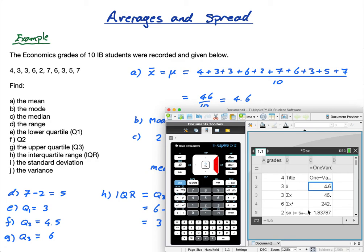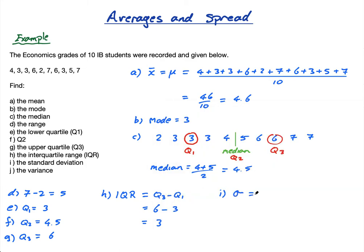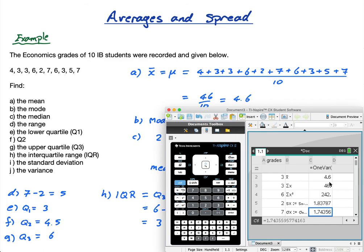Now what are these things? X bar, that's the mean, 4.6. That's what I got. This means the sum of X when you add them all up. And the sum of X squared, I don't need this. SX, we don't use that. This is the standard deviation, and this is the letter sigma. So sigma equals 1.74356. That is the standard deviation, a measure of how spread the data is.